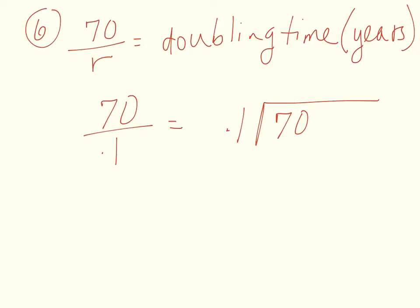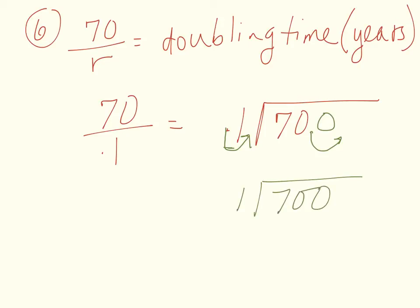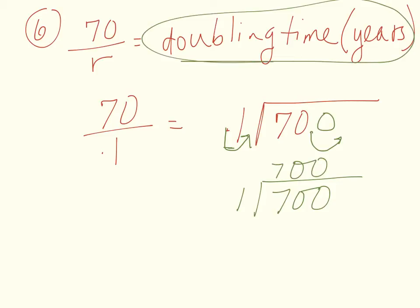We cannot have a decimal on the divisor side, so we get rid of it by moving it over once — which means we also move this decimal over once and fill in with a zero. Now we have 1 going into 700, which is just 700. Our answer comes out in years, so Belgium will double its population in 700 years.